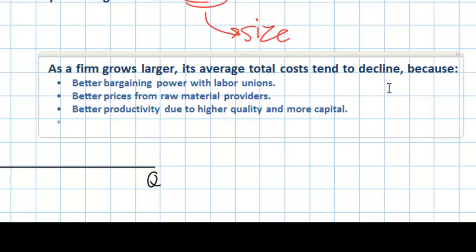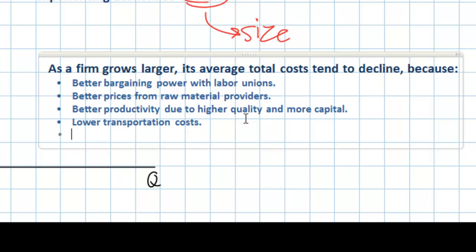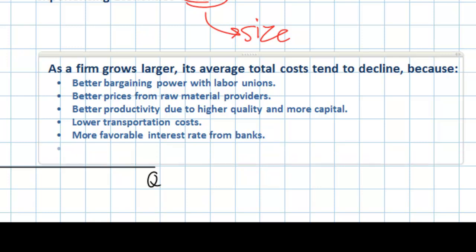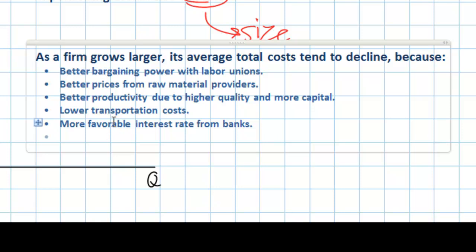A firm, once it is larger, can take advantage of lower transportation costs. If an airplane manufacturer ships parts for only one or two airplanes across the country, the per-unit costs will be relatively high. However, once a firm is larger, it can take advantage of bulk ordering and bulk delivery, bringing down the per-unit costs of delivery. Once a firm is larger, it also tends to get more favorable interest rates from banks. For example, Boeing or Airbus going to a bank for a loan would get a much lower interest rate than a startup, reducing fixed costs and therefore average total costs.